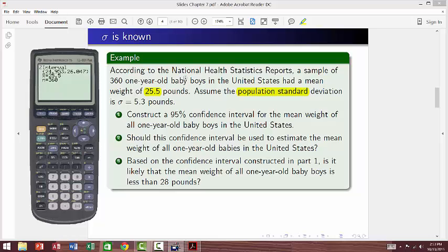So the last thing that you need to do when solving a problem like this is actually write an interpretation. So what would I do? I would say the following: We are 95% confident that the interval from 24.95 to 26.05 pounds actually contains the population mean weight of all one-year-old baby boys in the United States. So that's one way to interpret the confidence interval that you just got. Again, what am I saying here? We are 95% confident that this interval 24.95 to 26.05 pounds contains the actual population mean weight of all baby boys that are one year old in the United States.